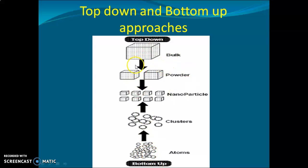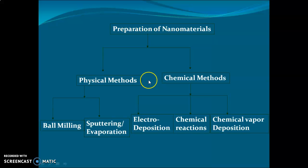In the top-down approach, a bulk material is taken and made into powder, then crushed into nanoparticles, then into clusters, and finally reduced to atomic size. The bottom-up approach is the reverse process — building smaller size materials into a bulk material. Bottom-up is essentially the reversible process of top-down.